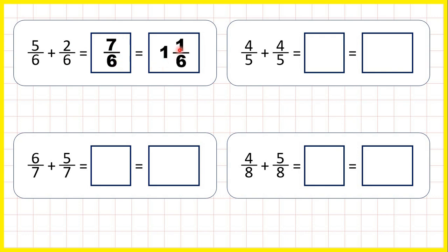That's 1 and 1 sixth as a mixed number, because 7 divided by 6 is 1 remainder 1, and the denominator stays the same.